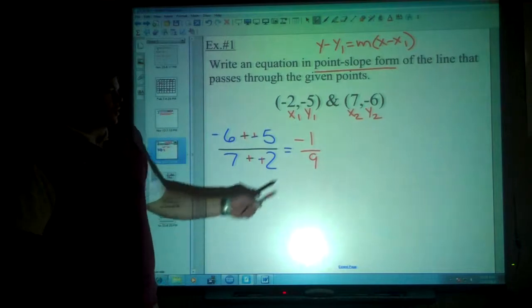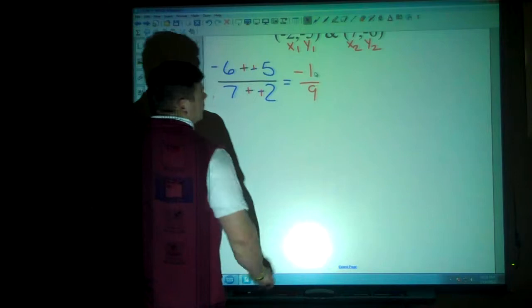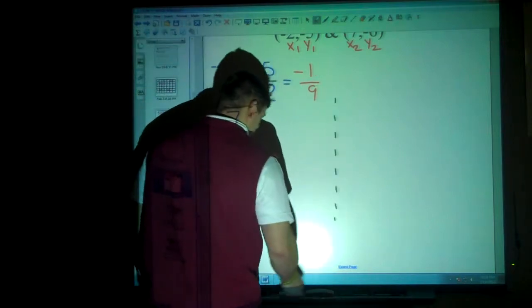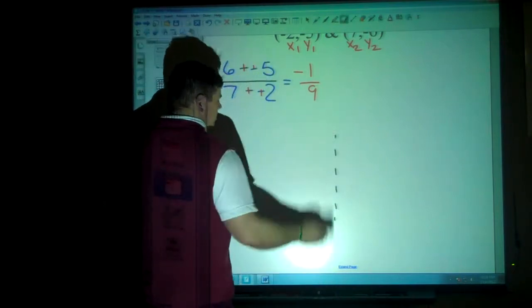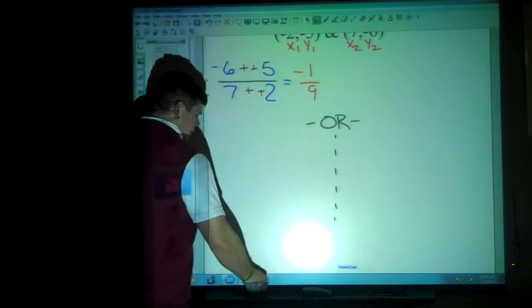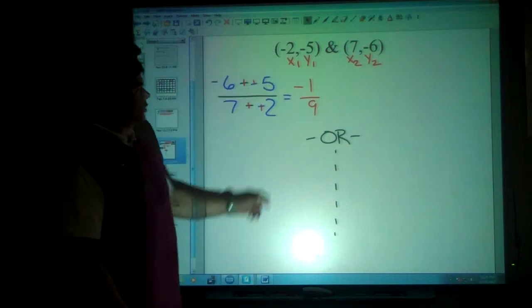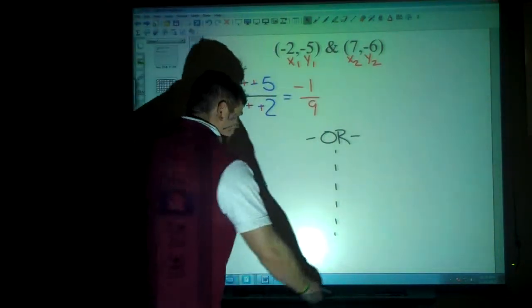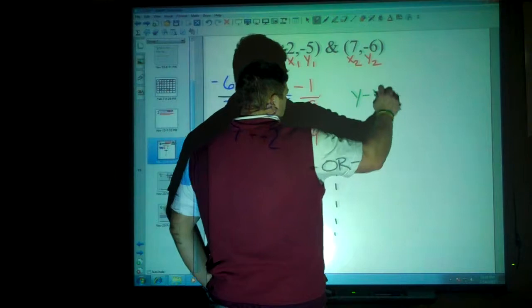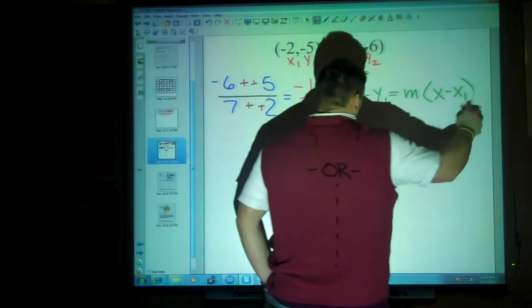Now, that's not the world's greatest slope, but it's okay. Now, I have two choices. There are two possible answers here. We can have either an answer that involves this coordinate or an answer that involves this coordinate. Either way, I'm going to use y minus y sub 1 is equal to the slope times x minus x sub 1.